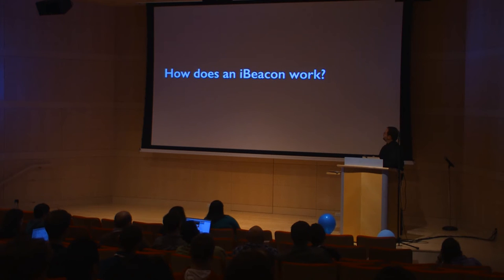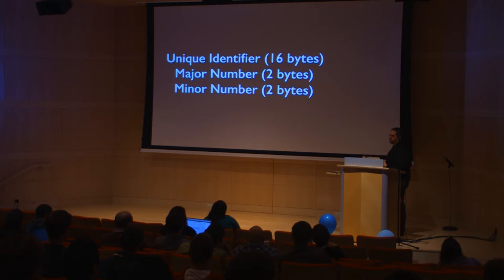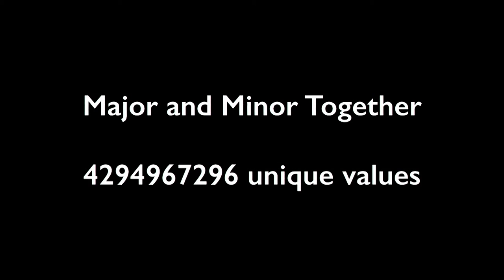If someone is hearing that beacon talk, the beacon can say who it is and what it's for at the same time. Those three identifiers are: first, a UUID — a universally unique identifier, 16 bytes; second, a major number that's 2 bytes; and third, a minor number that's also 2 bytes. You want to think of the UUID as one per company or per use case, since on iOS you can only tell an app or pass to monitor ten different identifiers at a time. The major number gives approximately 65,000 unique ways to differentiate a beacon, and the minor number gives 65,000 more. Combined, you get roughly four billion unique ways to differentiate an iBeacon under one company's usage.